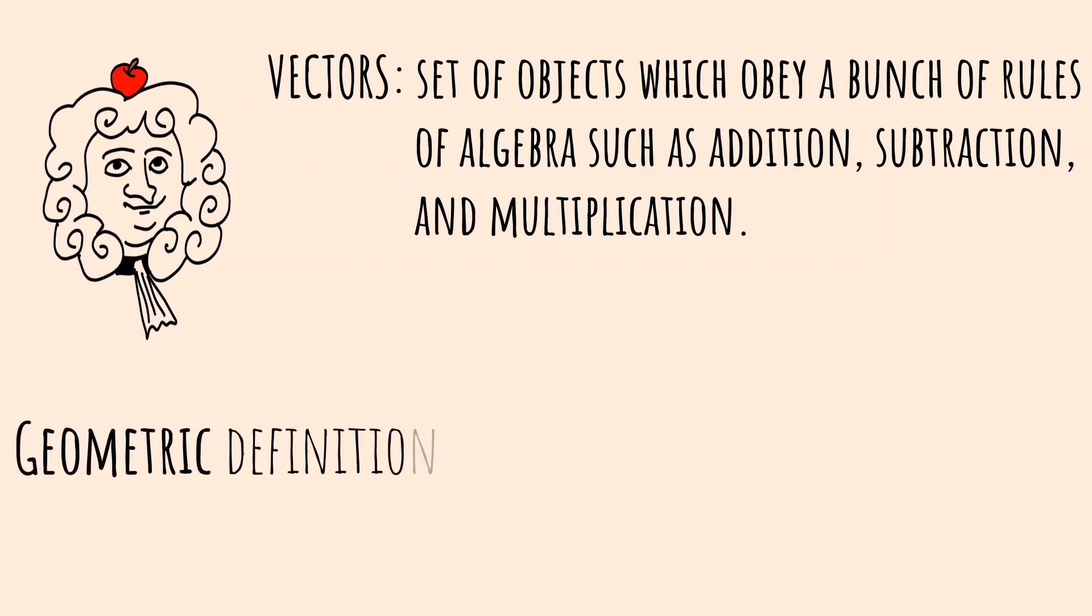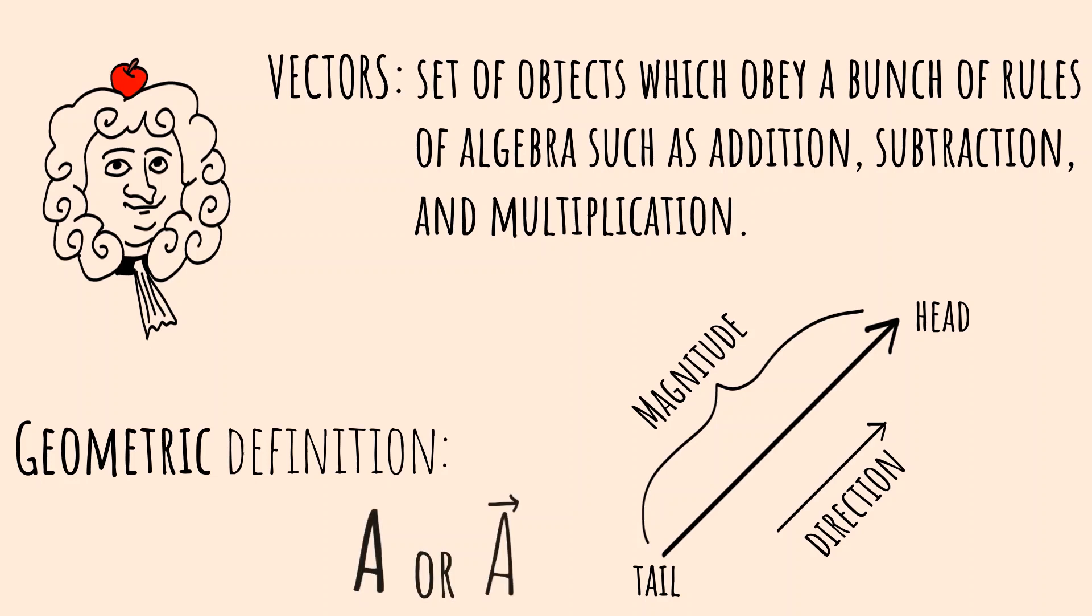But a simple geometric definition consists of an arrow representing a vector. Its length depicts the magnitude, and arrowhead points to the vector's direction. It can be either labeled as letters capped by an arrow or a boldface letter.